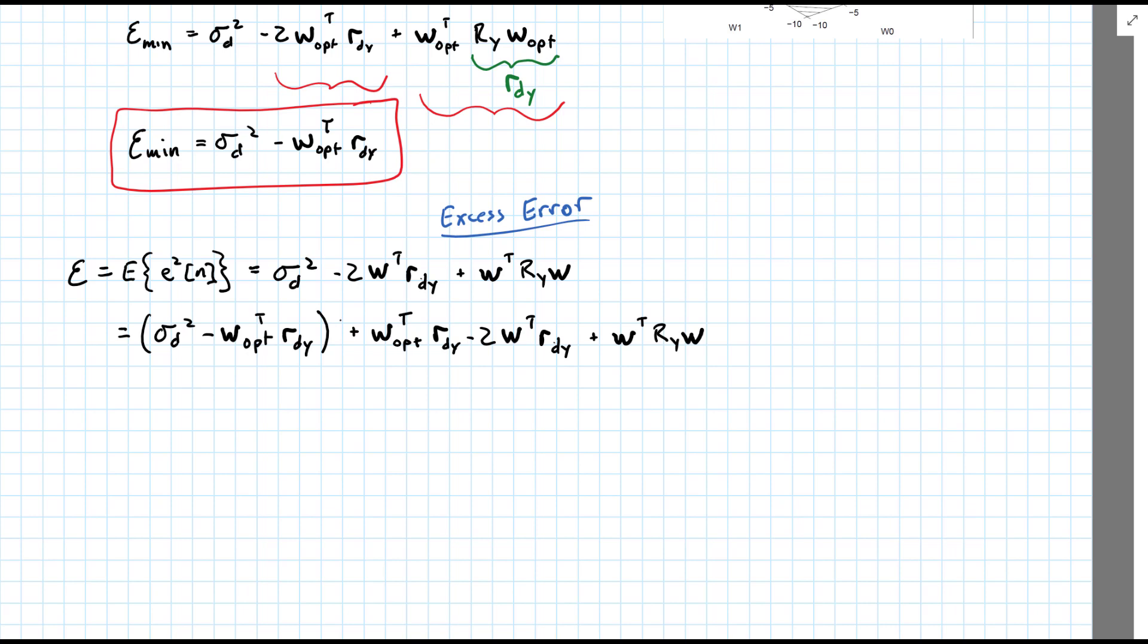So, here we've taken the liberty of adding and subtracting the same quantity to the same side of the equation. Which should not change the overall value, but doesn't change our interpretation somewhat. This right here, we've added w_opt transpose times r_dy, and we've subtracted the same thing.